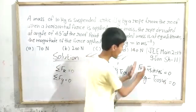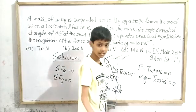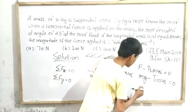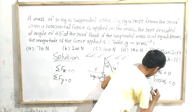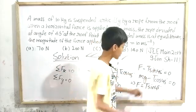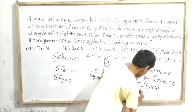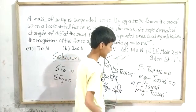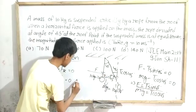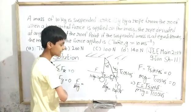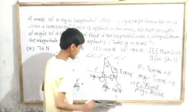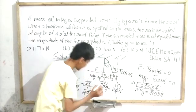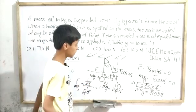Now I will divide these two equations. From the first equation, F equals T sin 45 degrees. From the second, mg equals T cos 45 degrees. Dividing: F by mg equals T sin 45 degrees divided by T cos 45 degrees. T and T cancel. Sin 45 over cos 45 equals (1/√2) divided by (1/√2), which equals 1. So F divided by mg equals 1.